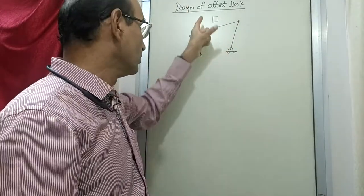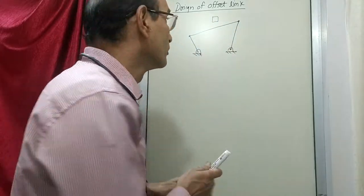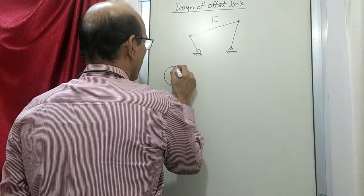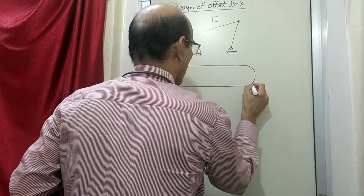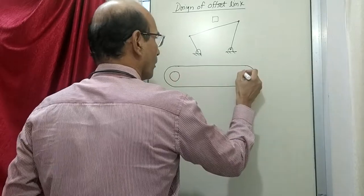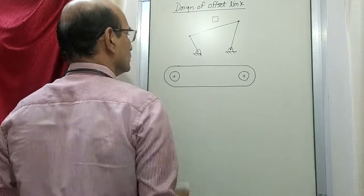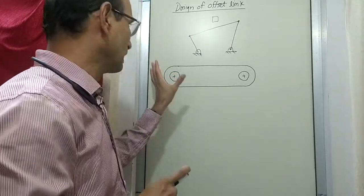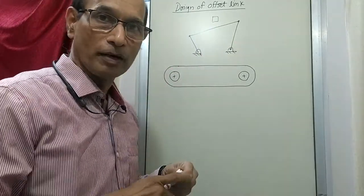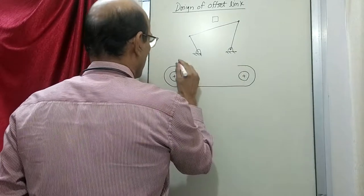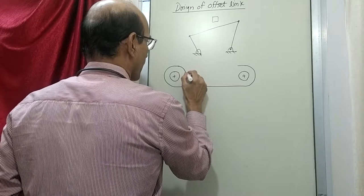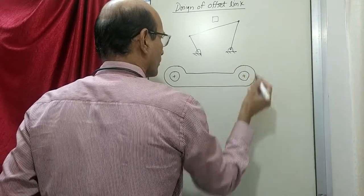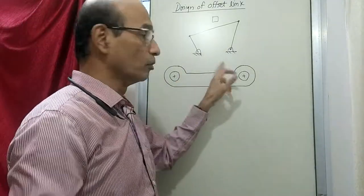Sometimes it is modified in such a way that it becomes an offset link. Let me first draw this link to see how it looks. So this link looks like this. Although we have drawn it like this, in actual practice it is something like this, and then there is a hole here for the pin joints - kinematic pairs. This is not an offset link, this is a normal link. Now because of this kind of obstruction, some material from here is removed and the shape of the link changes. That means here the material is removed, so now it is no longer symmetric.